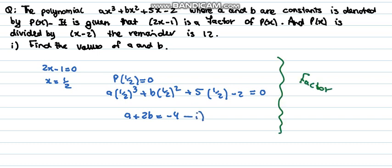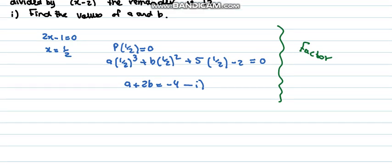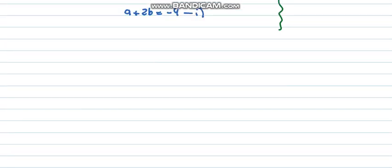So we have analyzed our factor expression. Now let's analyze the remainder expression. For the remainder, the divisor is x - 2. So x - 2 equals 0, x equals 2. And the remainder is 12. So p(2) equals 12.